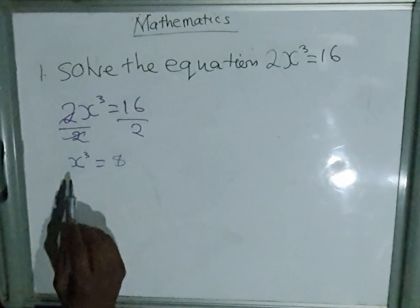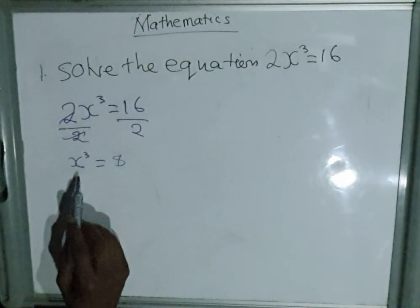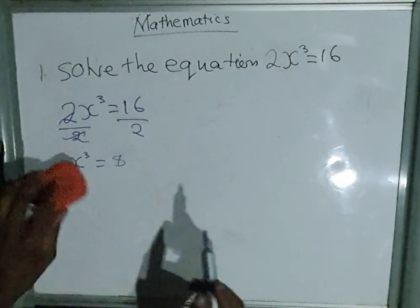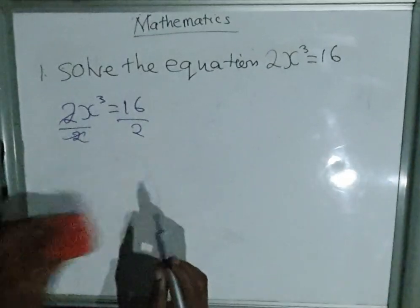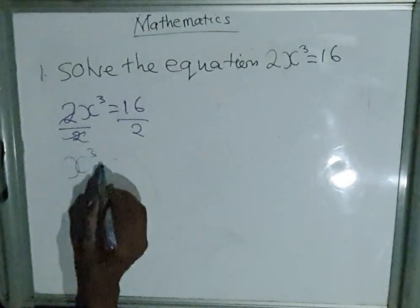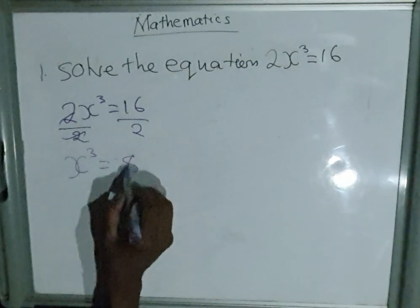...and we have x³ equals 2 into 16 equals 8. Now that we have this part, let me write something bigger. So we have x³ = 8.